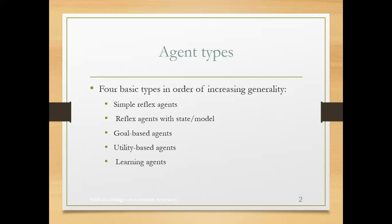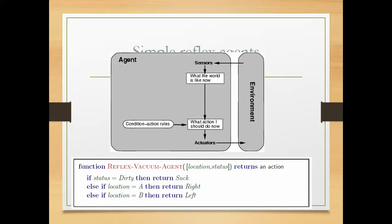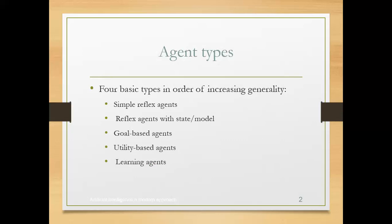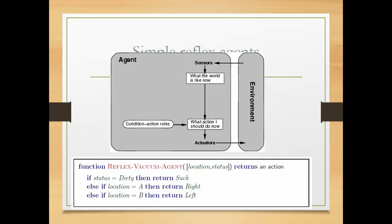Let us discuss how these five different types of intelligent agents work in a real-time environment. An agent is a combination of both sensors and actuators. What sensors will do — they perceive information from the environment. What actuators will do — they perform actions to the environment.